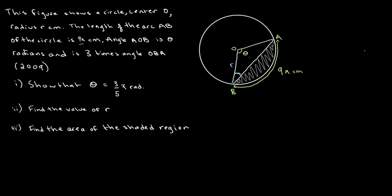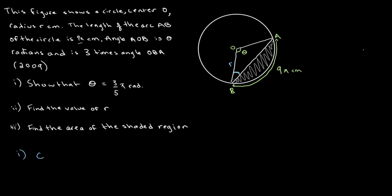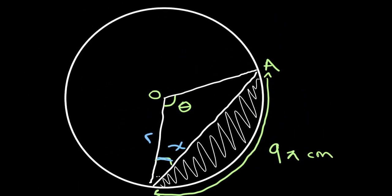Let's start with the first part of the question: we have to show that theta is equal to 3 over 5 pi radians. In order to do this, let's look at what information we have on theta. Angle AOB is theta radians and it is three times larger than angle OBA. Let's call angle OBA angle X, so we know that theta is equal to three times X.